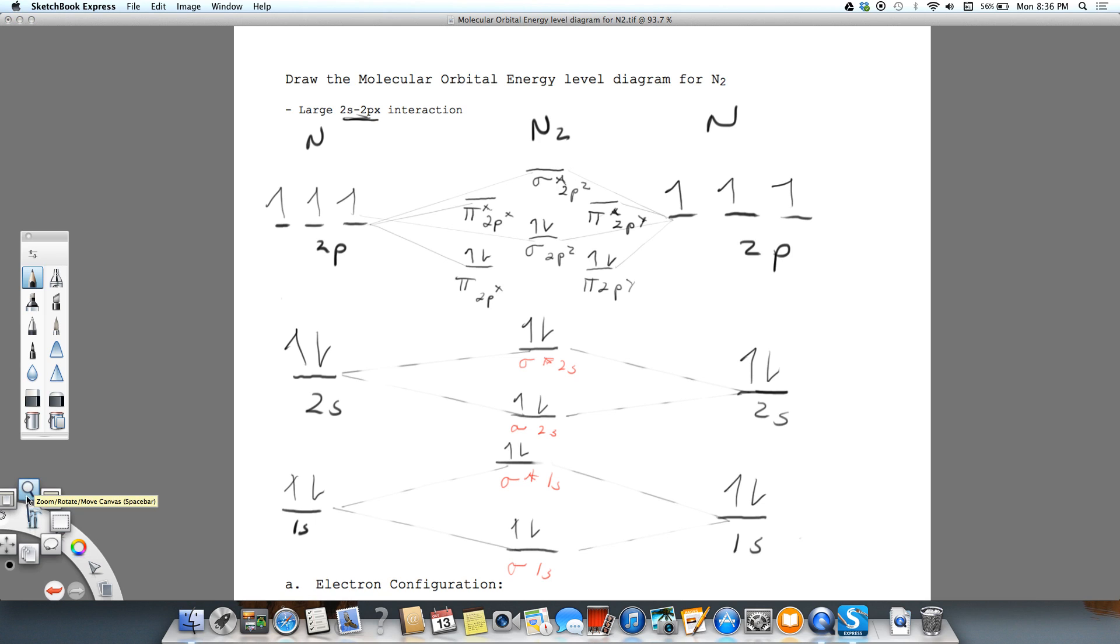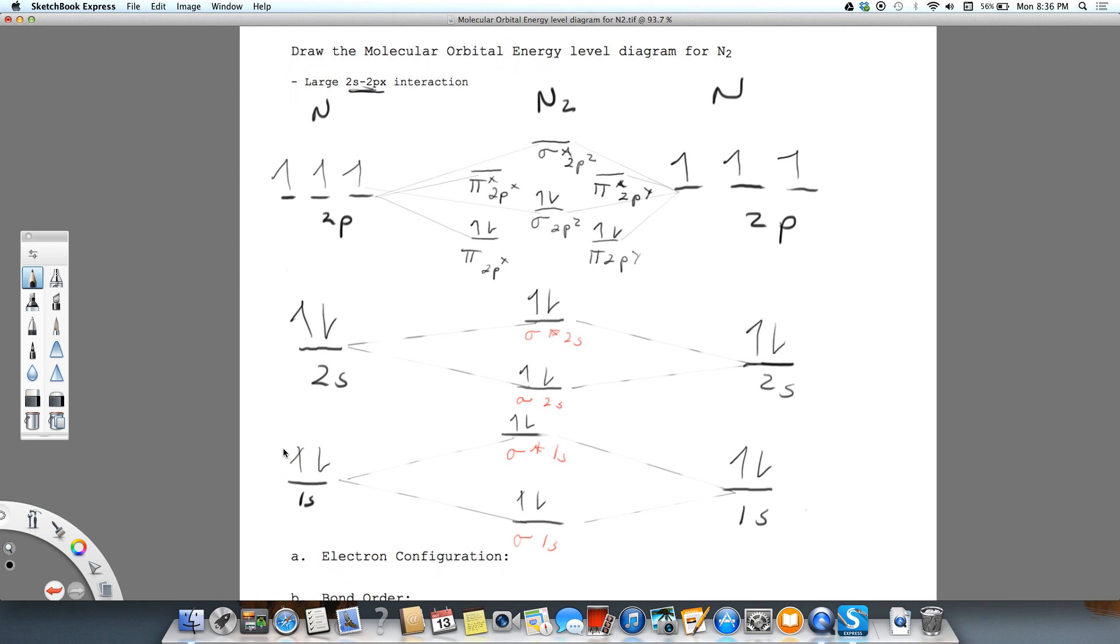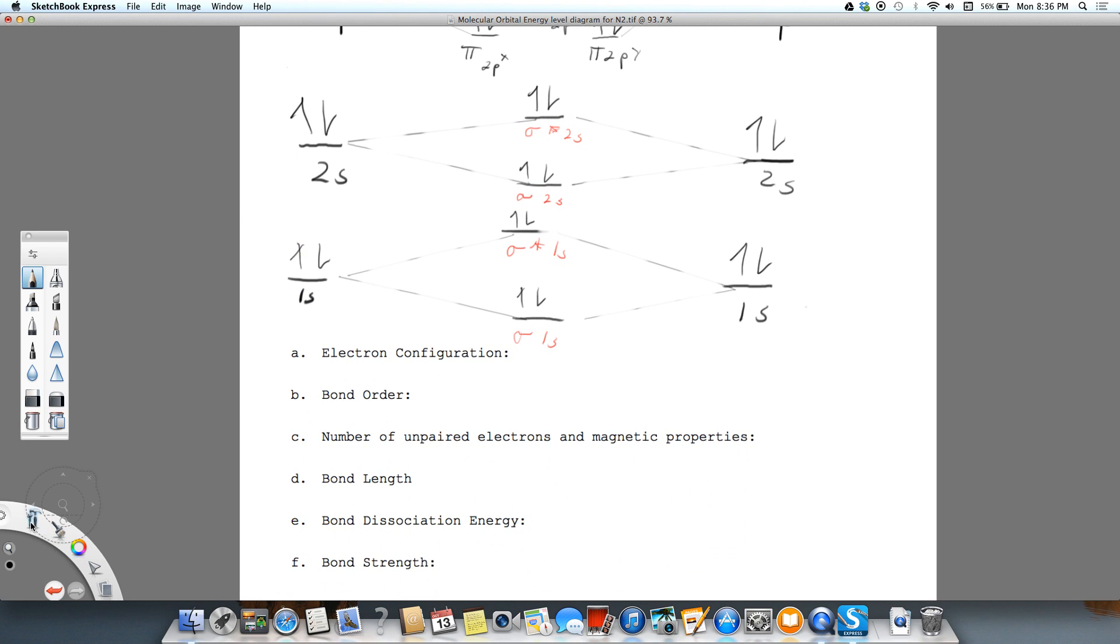Okay, so now let's go ahead and calculate our bond order. And then we'll do electron configuration. So the bond order is 1 half of 10 electrons.